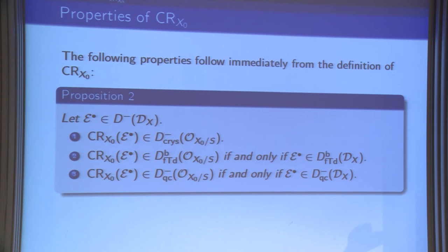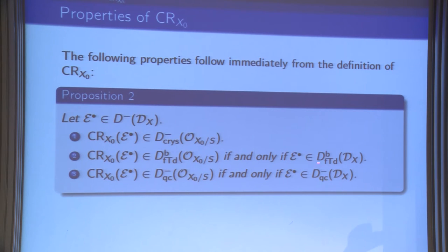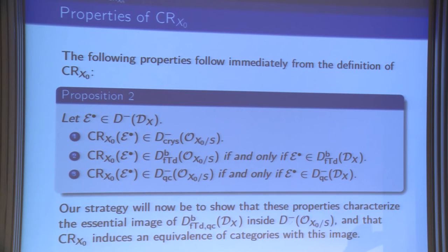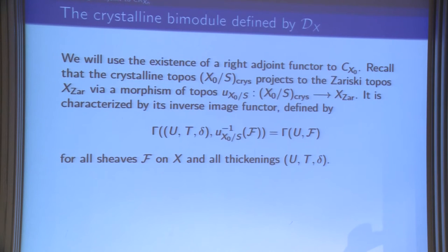Properties of CR_{X_0} follow easily from the definition. First, the complex you get is crystalline. Second, it has finite tor dimension over O_{X_0} if and only if you started with a complex of D-modules of finite tor dimension over D_X. Third, it is quasi-coherent if and only if the initial complex of D-modules was quasi-coherent. My immediate goal is to characterize the essential image of complexes which are finite tor dimensional and quasi-coherent over D_X by such properties.